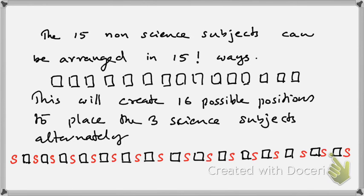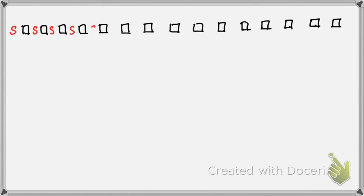S stands for science. I can put my science subjects at any one of these red positions — the science subjects will go into those red positions. There are 16 positions available for the science subjects to go. So the 15 non-science subjects are placed first, and now there are 16 possible positions where the science subjects can go.